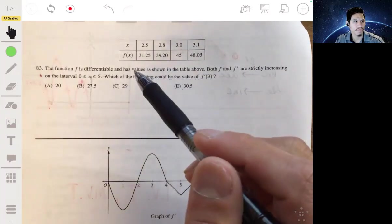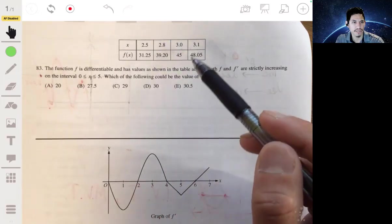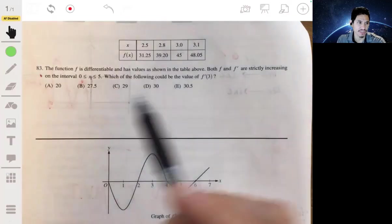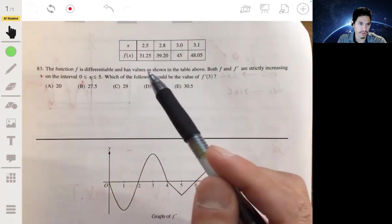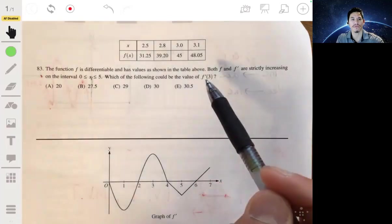Alright, problem 83. We have the function f is differentiable and has the values shown in this table, and both f and f prime are strictly increasing on the interval from 0 to 5. It's asking which of the following could be the value of f prime of 3.